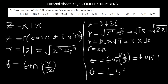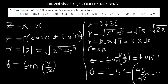You can write θ either in degrees or in radians. To convert 45 degrees to radians, you say 45 over 180 times π, which gives you π/4. So θ = π/4 radians. But if you want you can just leave it at 45 degrees.